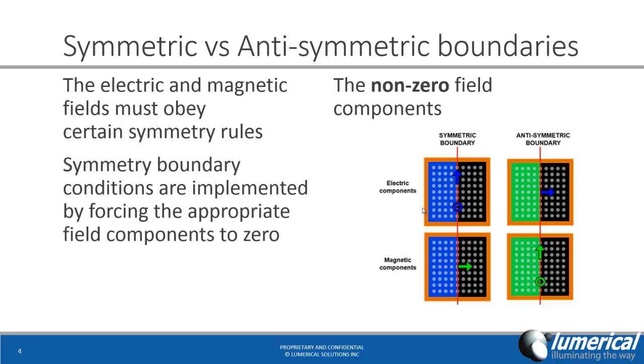The figure on the right side here shows the non-zero field components for the two types of boundaries. As you can see here, for symmetric boundaries on the left, the electric field is parallel to the boundaries, while the magnetic field, which is in green here, is perpendicular to the boundary. The opposite case applies for the anti-symmetric boundaries, which are in green. Here the electric field is actually perpendicular to the boundary, and the magnetic field is parallel to the boundary.